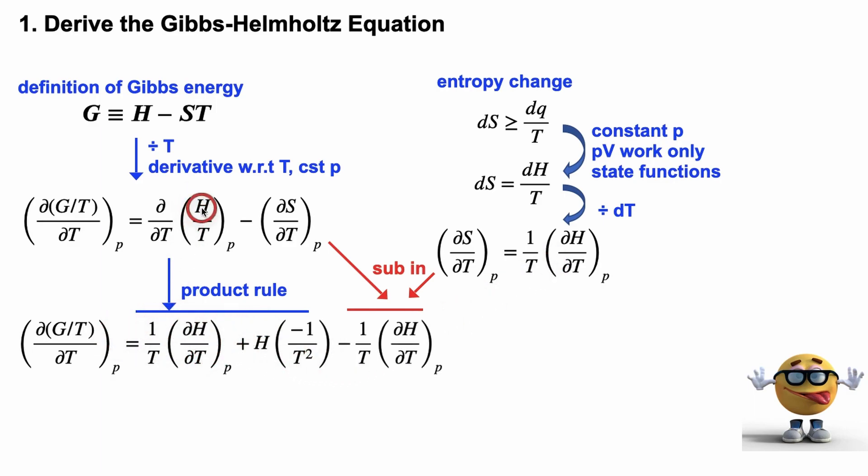See, this is the product rule. So product rule of this is the derivative of the first function, which is H, derivative of H right here, times the second function left alone, 1 over T is the second function, plus the first function left alone, H, times the derivative of the second function. And the derivative of 1 over T is negative 1 over T squared. And then this term right here is this one right here.